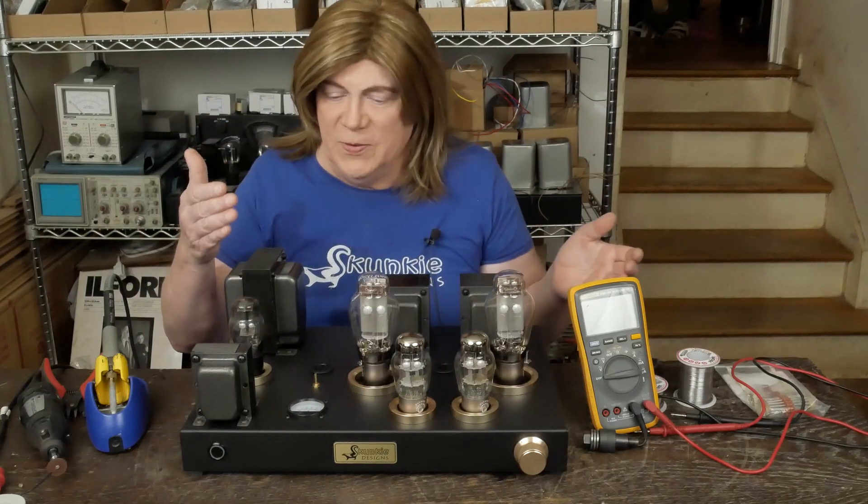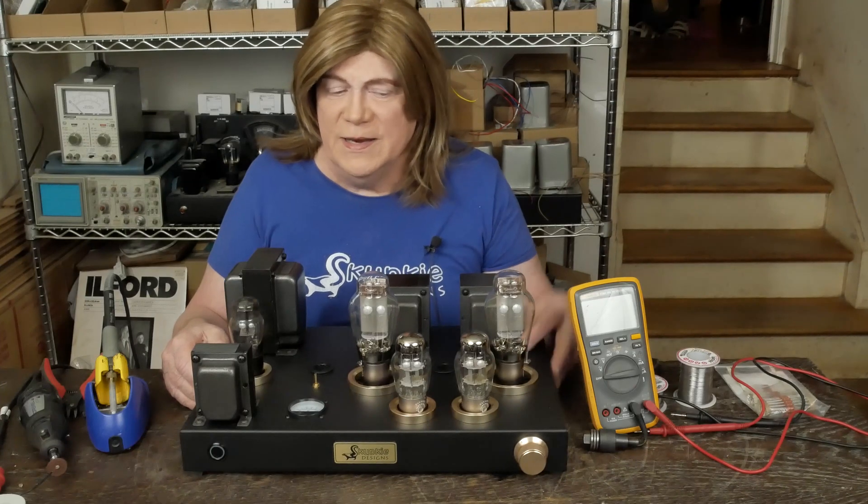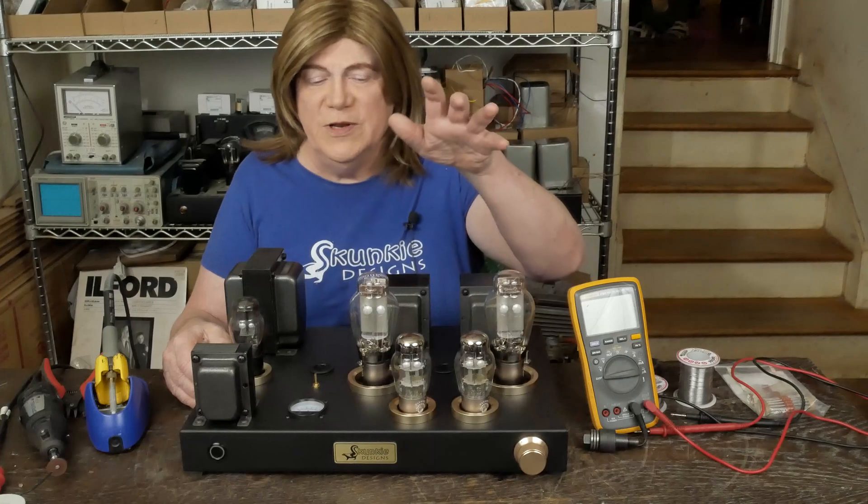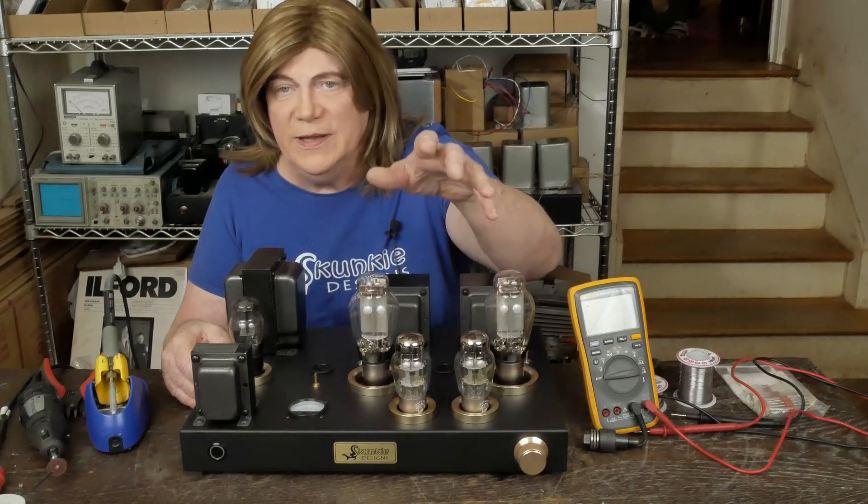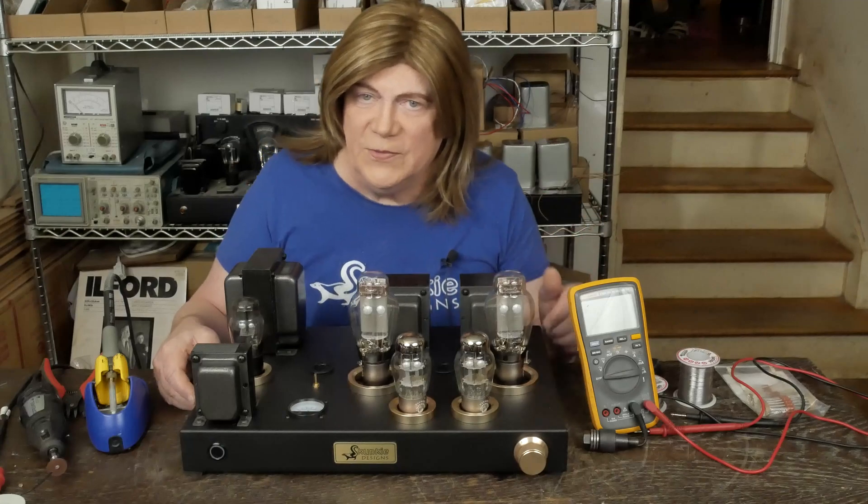Make sure that's where we want to see it, see what the B+ is, maybe play around with different rectifier tubes if we need to get the voltage dialed in and make sure these tubes are happy. Then we can finish up the front end wiring and check the bias.